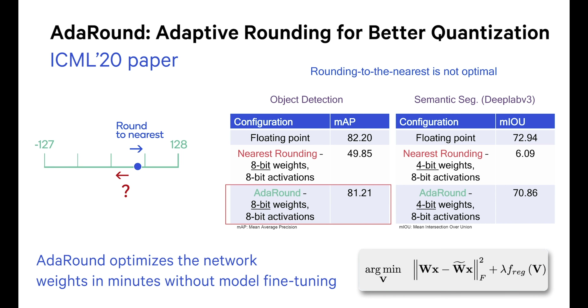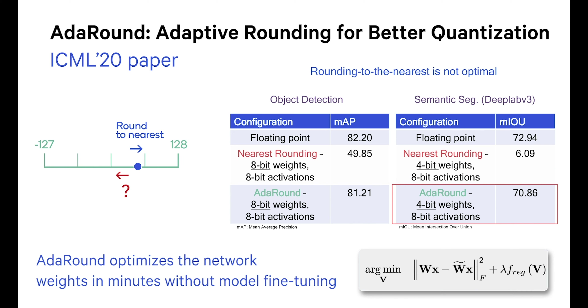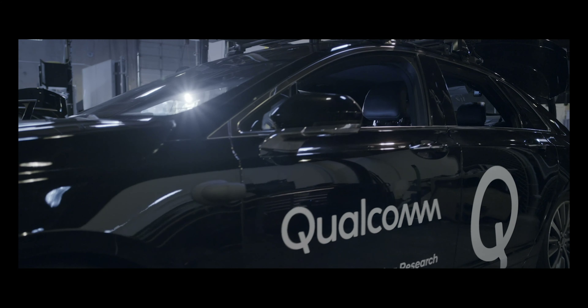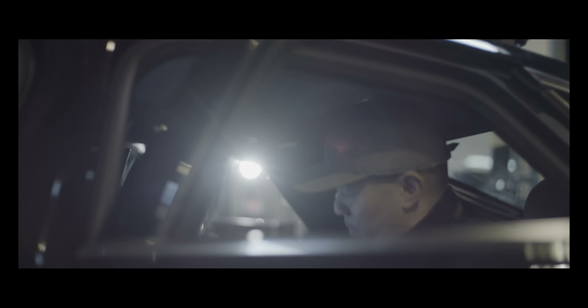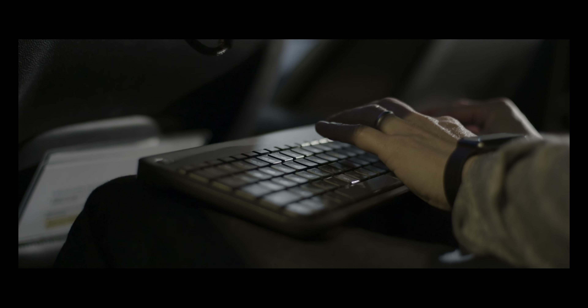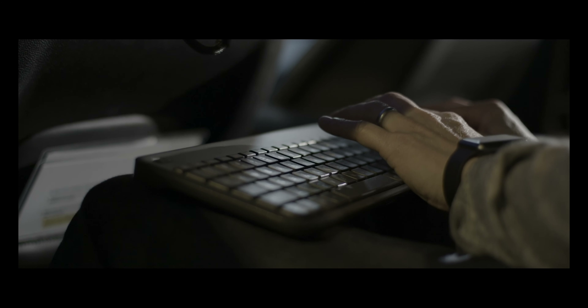Results for object detection and semantic segmentation tasks show AdAround significantly outperforms nearest rounding and provides performance close to floating-point models. To demonstrate this, we compare AdAround 8-bit weight and activation quantization with a baseline 8-bit quantization technique on an object detection model.